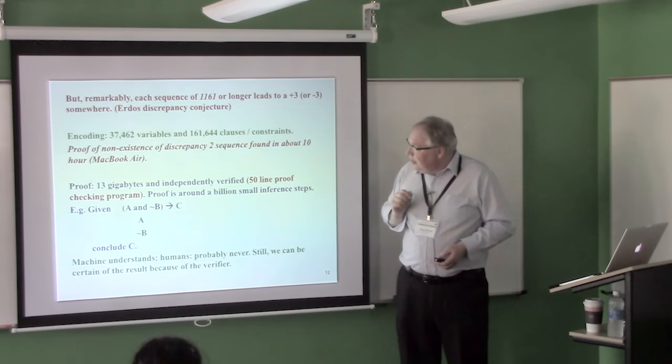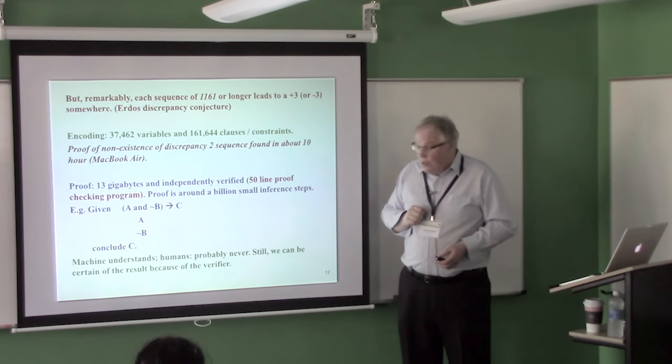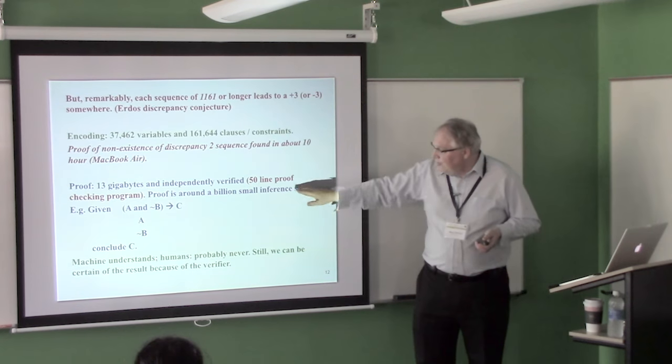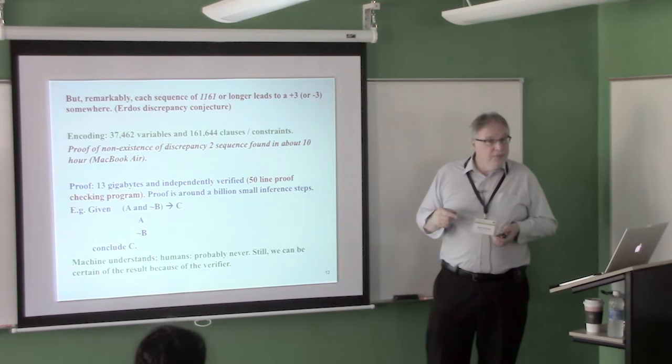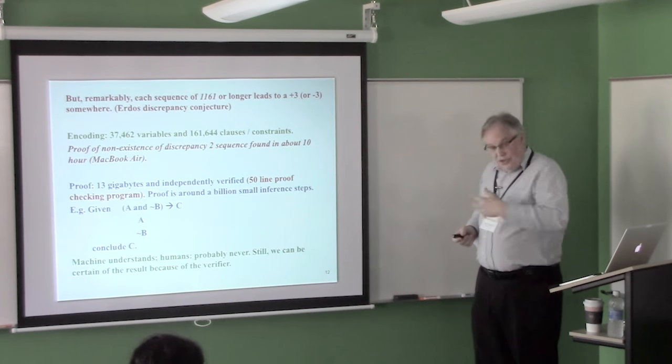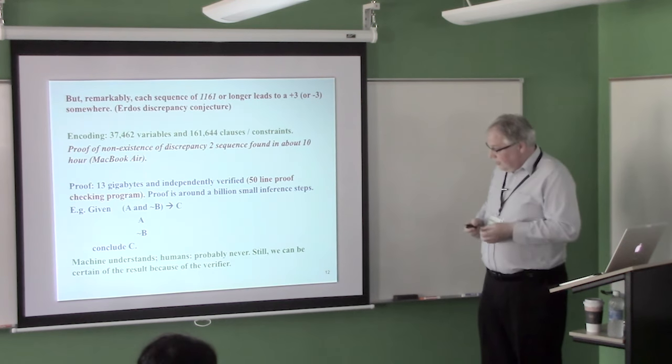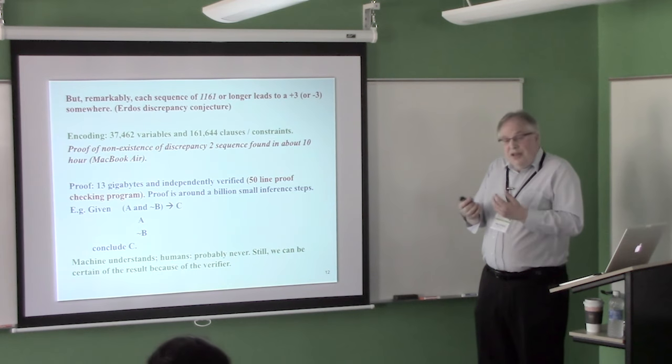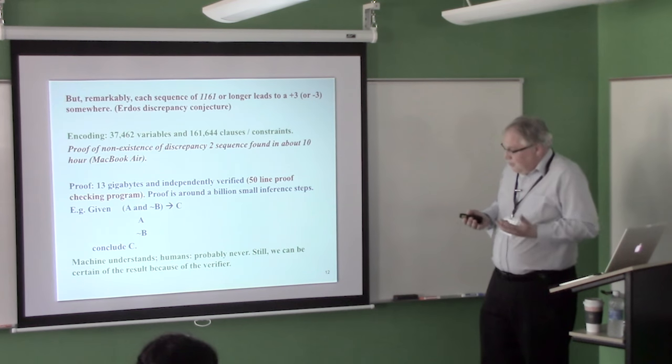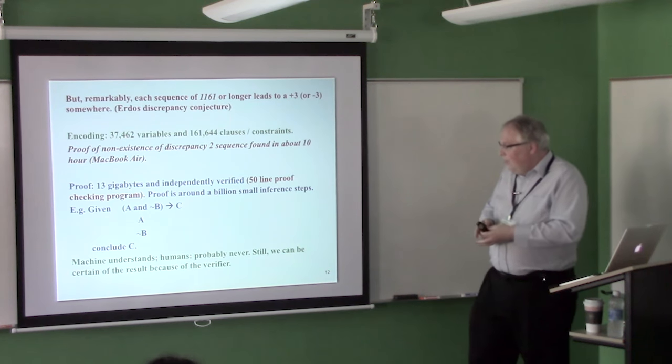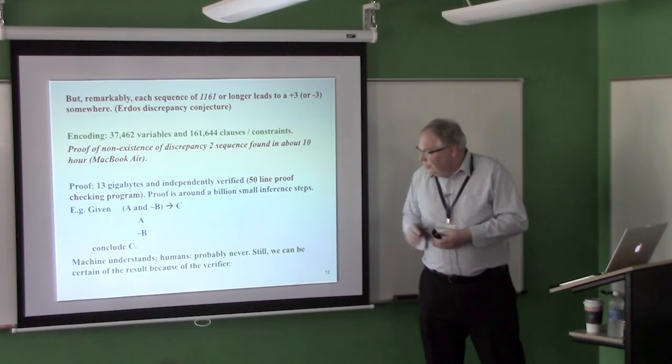And everybody can write their own little checker and just do it. And now you're certain, that that's actually correct. Now, of course, what we're left with is, the machine can understand this. The human never really understands the proof, I guess. But for the machine, a billion steps is not such a big deal. But the key thing is, we can be certain of the result. And that, that's my first observation.